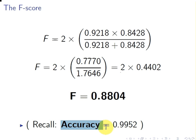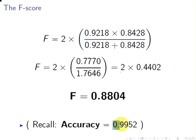Now compare that with the accuracy score we found earlier. The F-score of 0.8804 indicates much more room for improvement — whereas looking at the accuracy alone you might think everything is great, but in fact it's not. That ends our presentation.